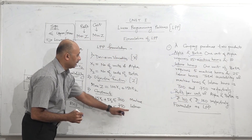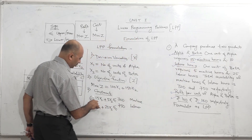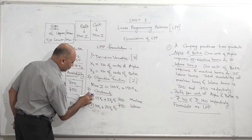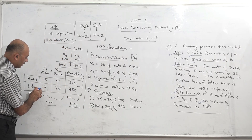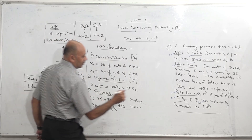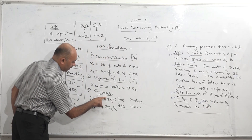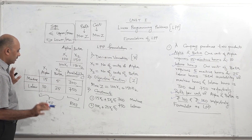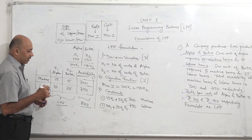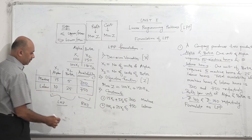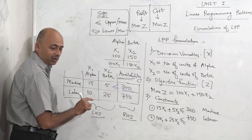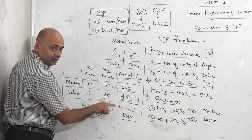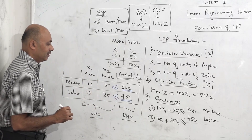One unit of alpha requires 15 machine hours, so it is 15x1, and 10 labor hours, so 10x1. One unit of beta requires 5 machine hours and 25 labor hours, represented as 5x2 and 25x2. It is always advisable to convert data into a table format to make writing constraints easier. Availability is the upper limit for both machine and labor, so the sign of both constraints is less than or equal to. This is what we call the formulation of LPP.